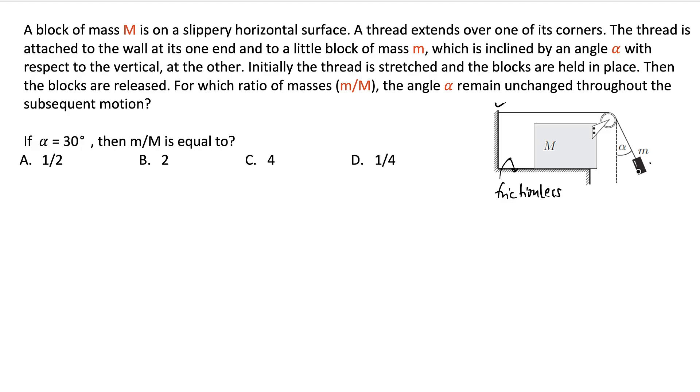Once it is released, then basically the question is asking, what should be the ratio of m by M, this mass by this M, so that the angle alpha remains unchanged throughout the motion.